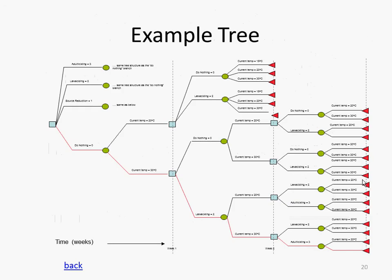Here's an example tree. At week one we have a choice: are we going to larvicide, adulticide, source reduce the size of pools around, or do nothing? Doing nothing is often a valid choice — it doesn't look like it's going to be that hot a week, so we'll wait another week and re-examine. Then the week plays out — maybe it's hot, maybe it's cold. These outcomes are discrete: temperatures 25 and above versus 25 and below. And then we face another decision, and eventually we get down to consequences.